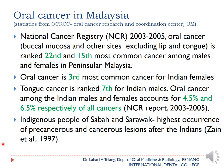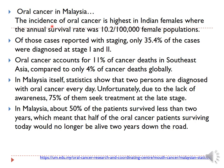Indigenous people of Sabah and Sarawak have the highest occurrence of pre-cancerous and cancerous lesions after Indians. The incidence of oral cancer is highest in Indian females with an annual rate of 10.2 per 100,000 female population. Of cases reported with staging, only 35.4% were diagnosed at Stage 1 or 2 — meaning nearly 65% were diagnosed already at Stage 3 or 4, which is very concerning.